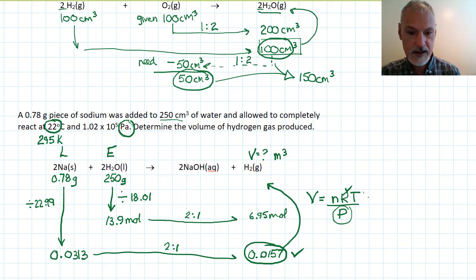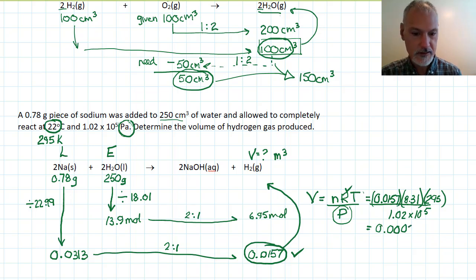So let's put the values in then for what we have here. So our number of moles, 0.0157. Gas constant, 8.31. Temperature, 295. And finally, our pressure, 1.02 times 10 to the 5 pascals. Substituting and solving, you should get 0.000. Two significant digits in my mass, so ultimately two significant digits in my answer. And as I mentioned earlier, that will be in cubic meters because my pressure was in pascals.